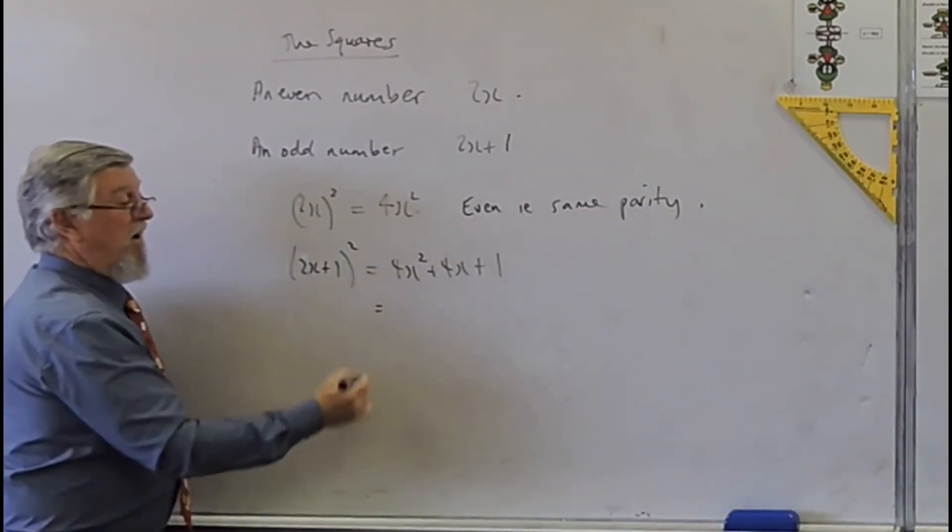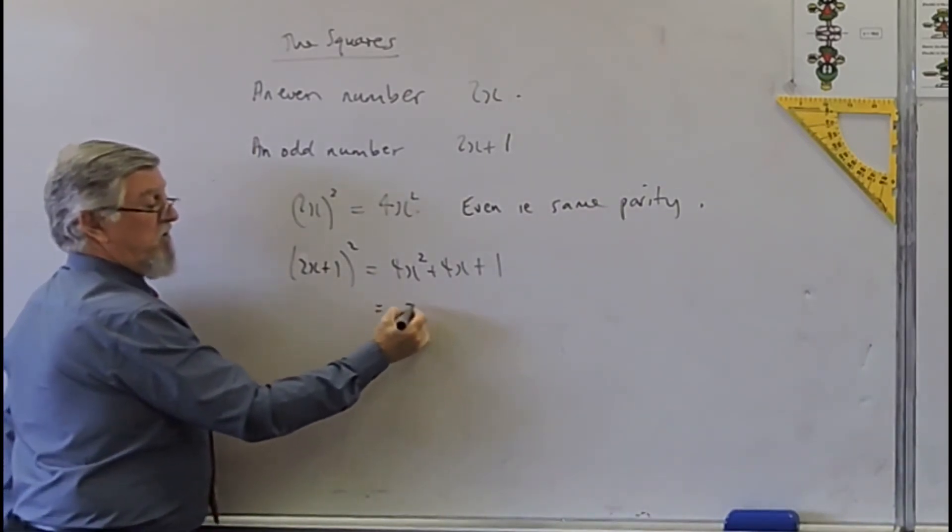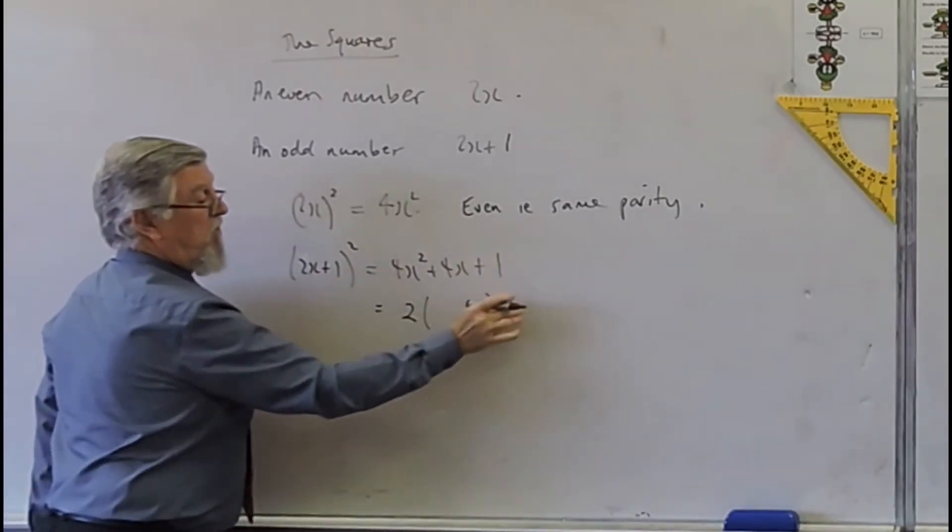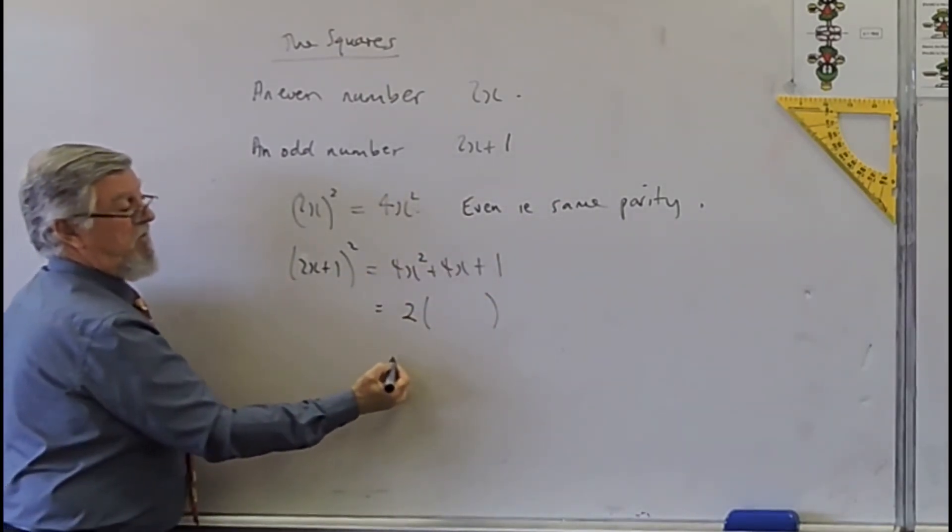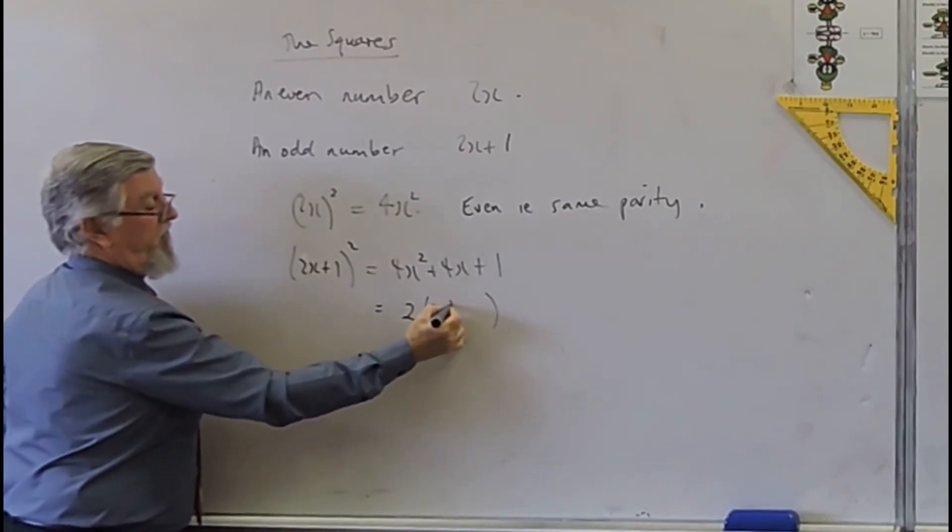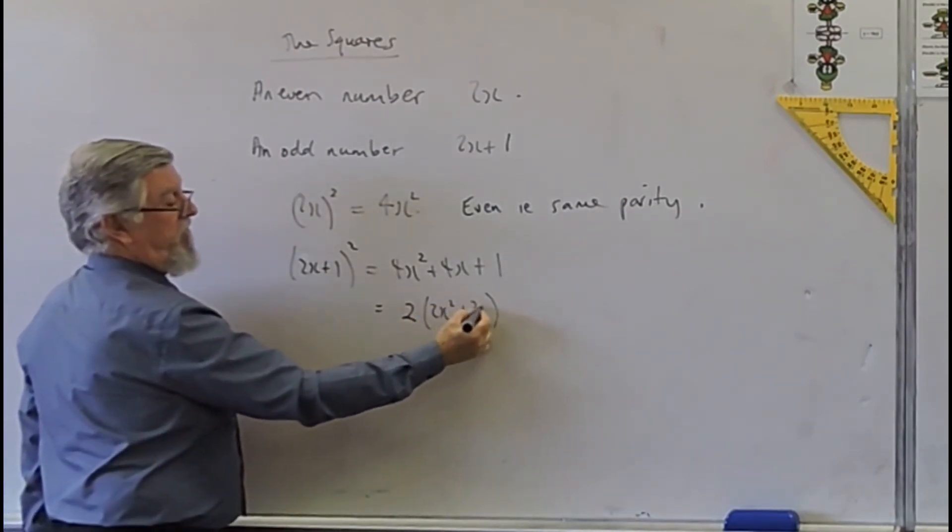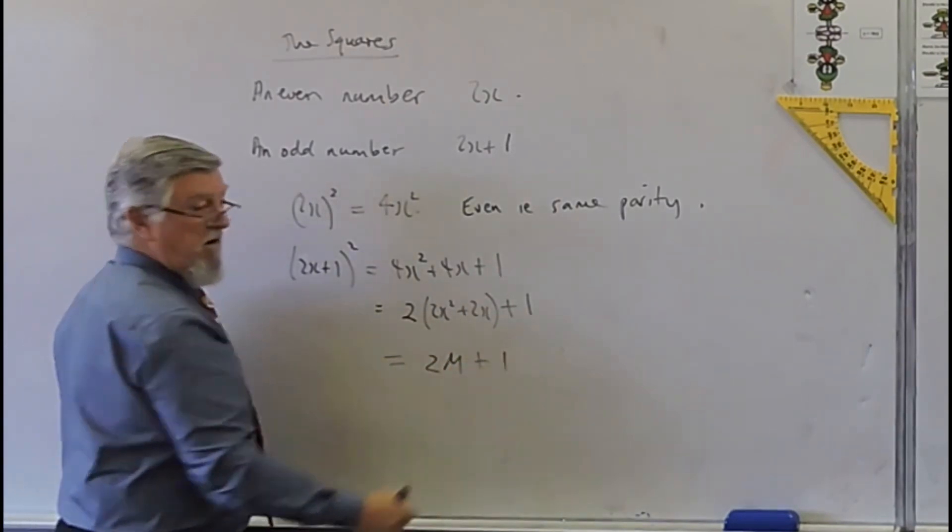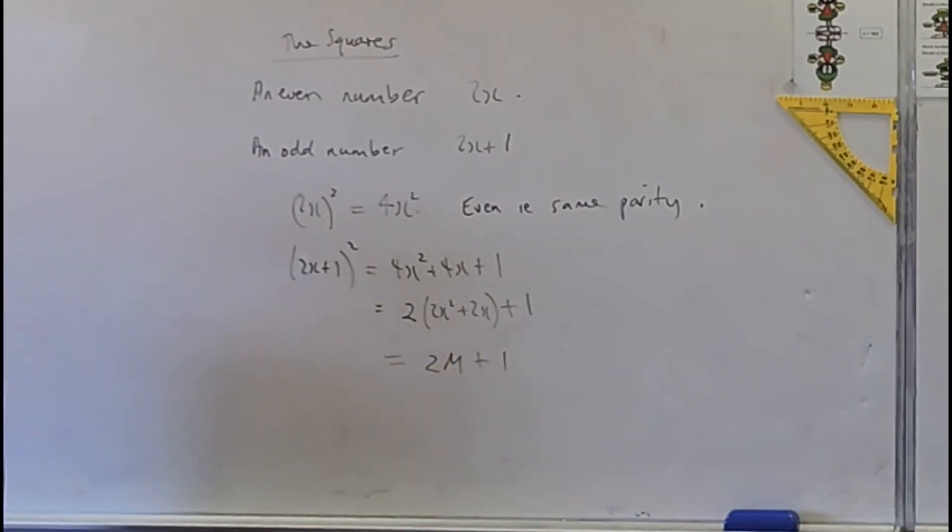So what have we got now? I could write this as, ignore the 1 for now, it would be 2 times (2x squared plus 2x). So I would have liked to have written this as 2(2x squared plus 2x) plus 1, which is one more than an even number.